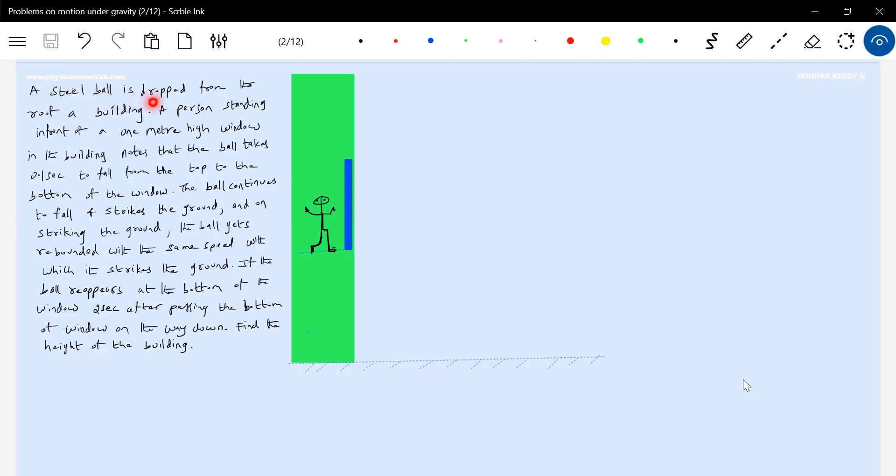Let me read it. A steel ball is dropped from the roof of a building. A person standing in front of a one meter window in the building knows that the ball takes 0.1 seconds to fall from the top to the bottom of the window. So this is the window, and the ball is dropped from here.